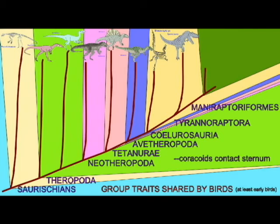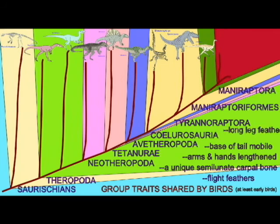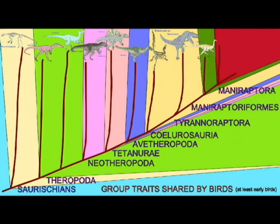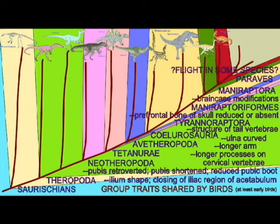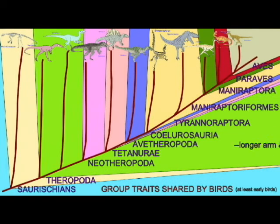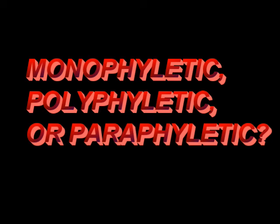Use the following videos to distinguish between three groups: monophyletic, including all of the descendants of the last common ancestor; polyphyletic, not including all of the descendants of the last common ancestor; or paraphyletic, in which some but not all of the descendants of the last common ancestor are included.